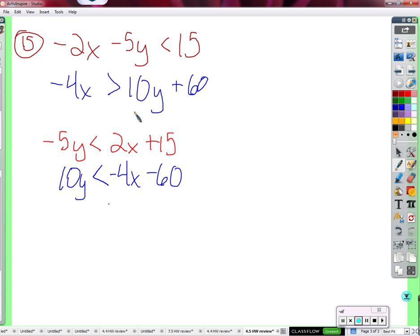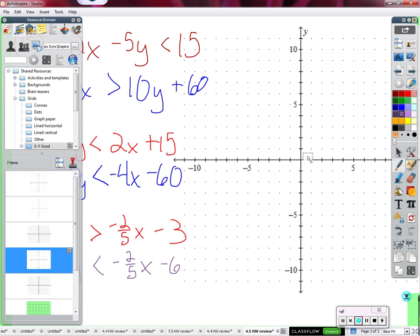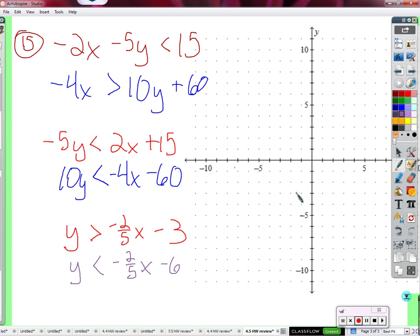Got to do more, right? Monica? On the top one, you divide by negative 5. Divide by negative 5 on the top one. So, that's going to give us a positive y. We're going to flip that sign around. We're going to get negative 2 fifths x. And we're going to get negative 3. And the blue one. Johnny? Divide by 10. Divide by 10. A positive 10, so the sign will still be like that. Divide this by 10, you get negative 2 fifths. Oh, look at that. Divide negative 60 by 10, you get negative 6.